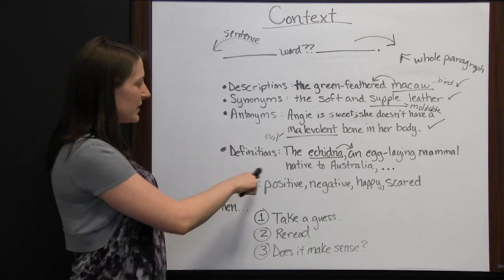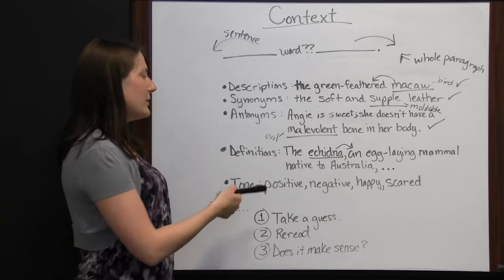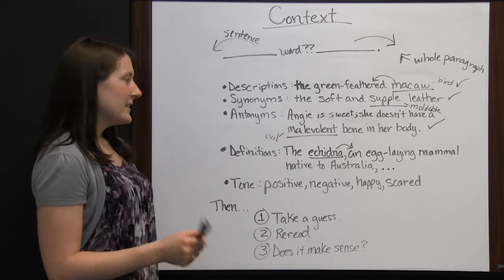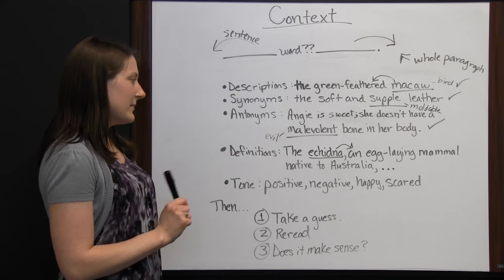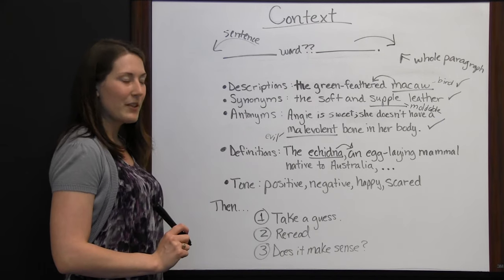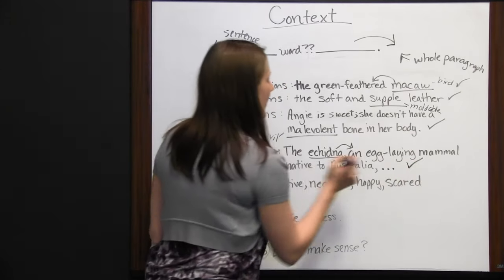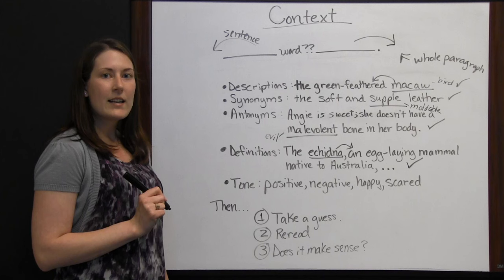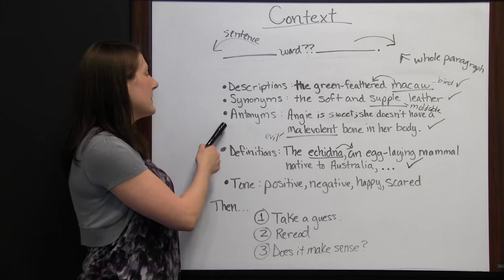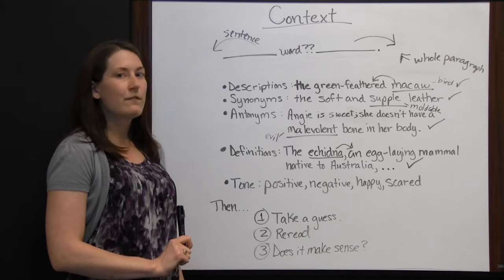The echidna sentence is a little different — if they plug in a definition for you, it's harder to check; you would just read the definition they provided. There's not really a synonym for echidna you could have come up with. Once you've checked to make sure your guesses make sense, you have a pretty good idea of what a word means. Using context clues — description, synonym, antonym, definition, or tone — can help you figure out those pesky unfamiliar words.